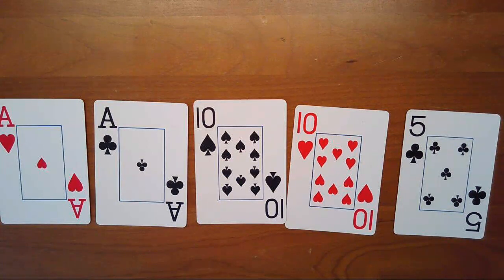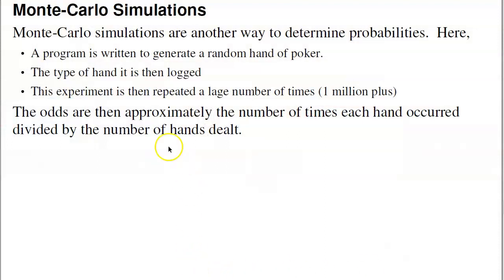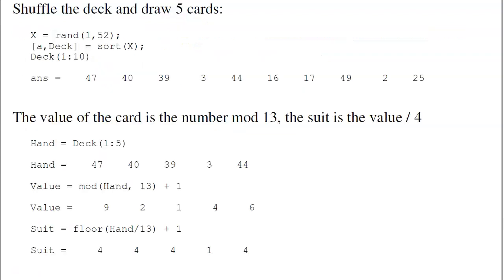I can verify those results with a Monte Carlo simulation. What a Monte Carlo simulation does is write a program in MATLAB to draw a random hand, determine what type of hand it was, and repeat. Do that a million times, and count how many times out of a million I got a full house, a royal flush, a two pair, and so on. That'll tell you roughly where the probability is. As the number of hands goes to infinity, it will converge to the actual probability. To do that, I first have to shuffle a deck. In MATLAB, I pick 52 random numbers and then sort them.